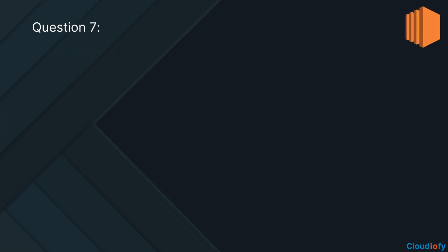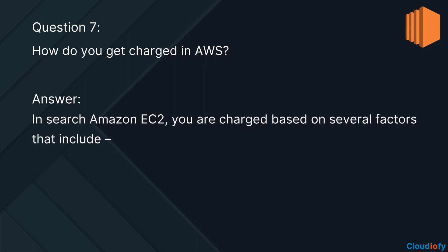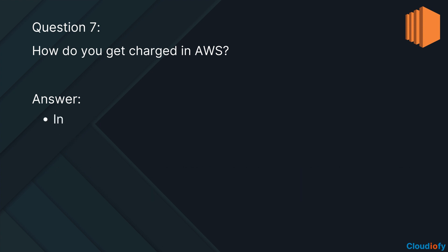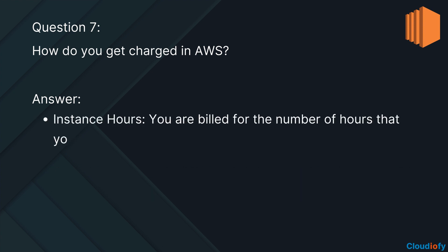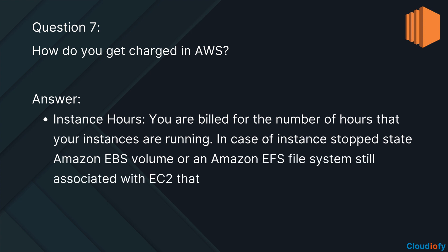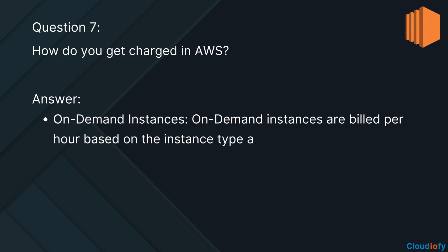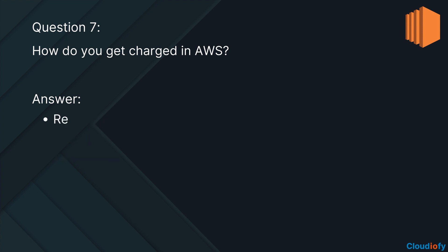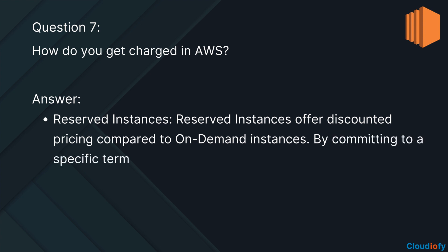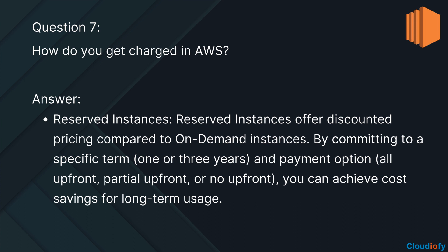The next question is: how do you get charged in AWS? In Amazon EC2, you are charged based on several factors. Instance types: the primary cost is based on the type and size of the instances you choose. Instance hours: you are billed for the number of hours your instances are running. In a stopped state, Amazon EBS volumes or Amazon EFS file systems still associated with EC2 are billed for storage. On-demand instances are billed per hour based on the instance type and region. Reserved instances offer discounted pricing compared to on-demand instances by committing to a specific term — one or three years — and payment option: all up-front, partial up-front, or no up-front — achieving cost savings for long-term usage.